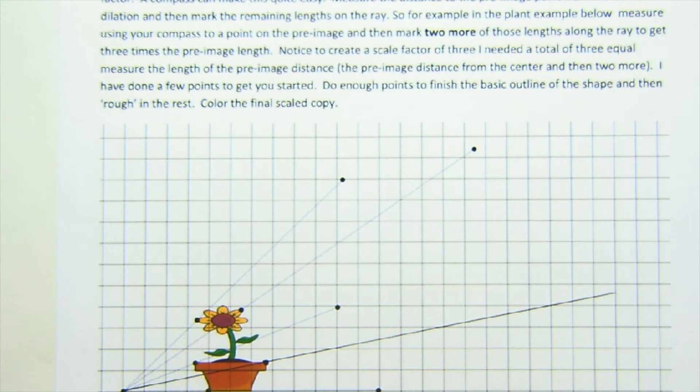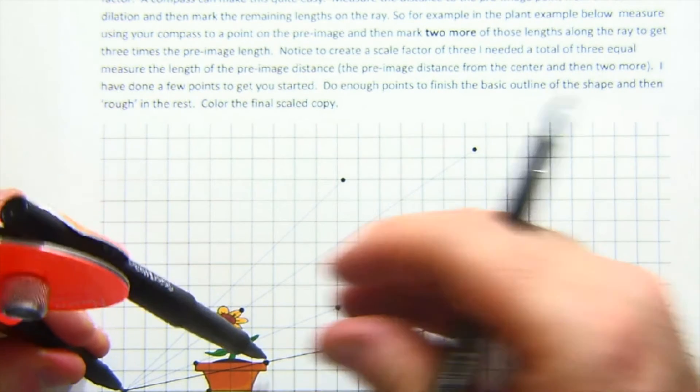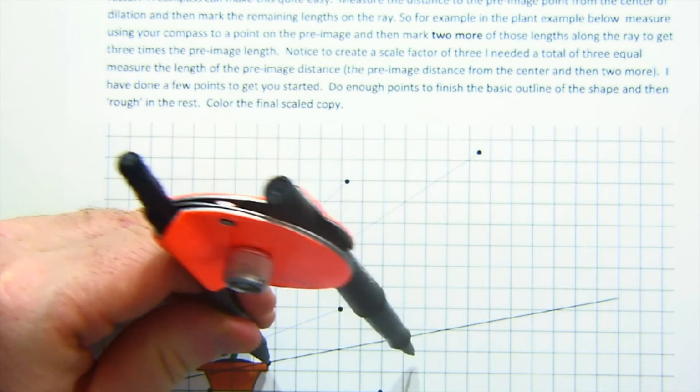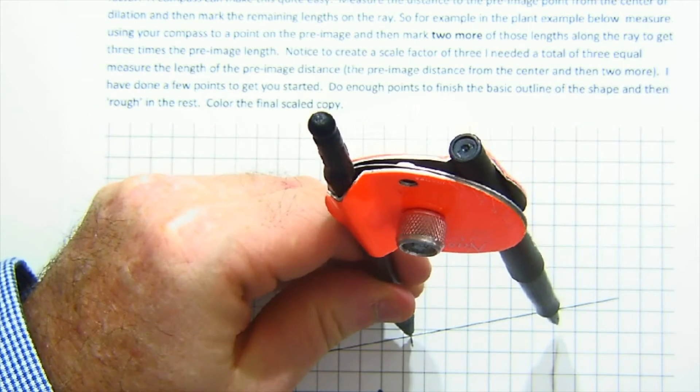And then what you do is you take out your compass and you say, all right, how far is that? And you measure it and that would be one, and then you would have two, and then you would have three.